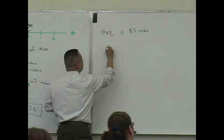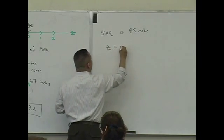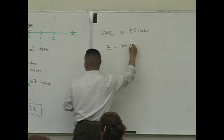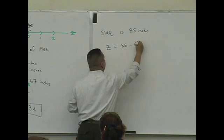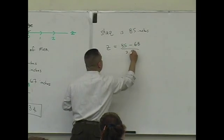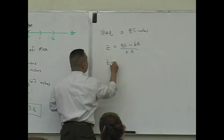And so let's determine Shaq's Z score. Shaq is 85 minus the mean, which is 68, divided by 2.9. What is Shaq's Z score?